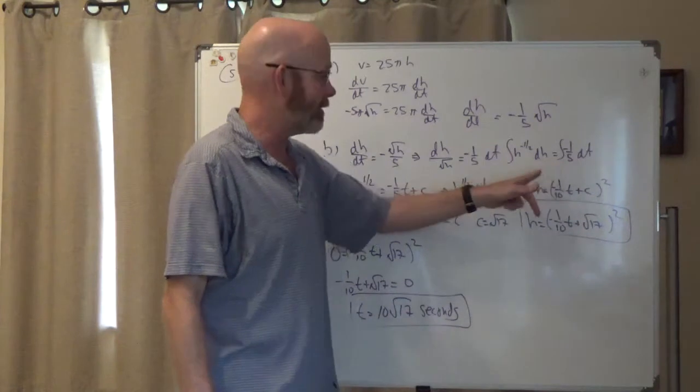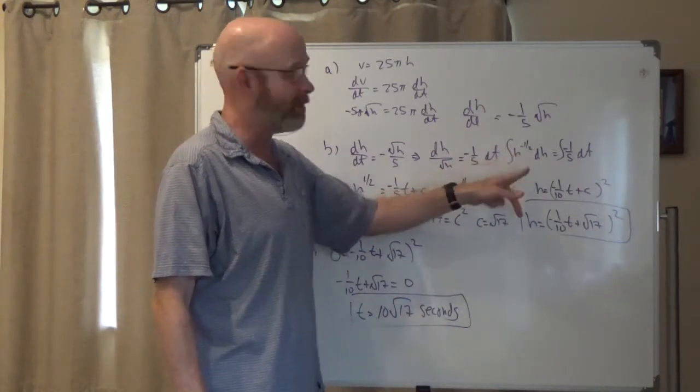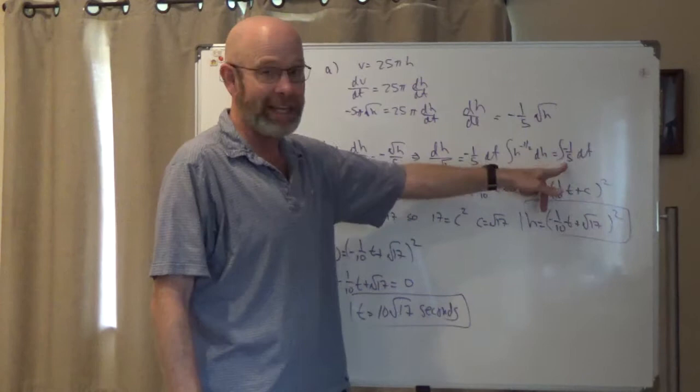Then I'm integrating both sides. I just rewrote that as h to the negative one-half. So h to the negative one-half dh, negative one-fifty t, integrate.